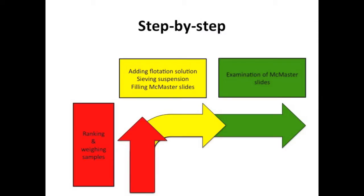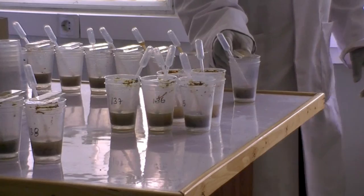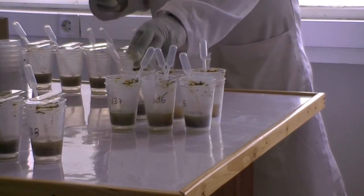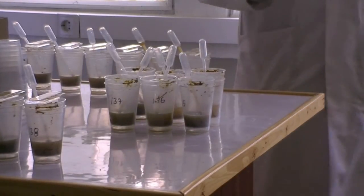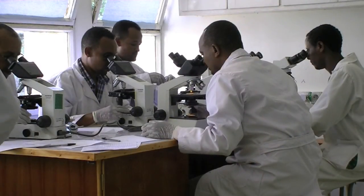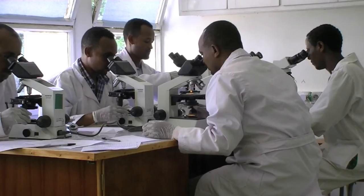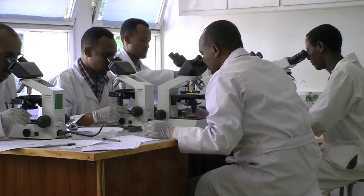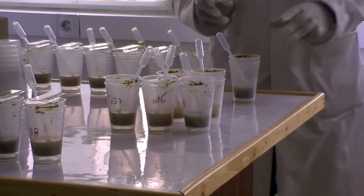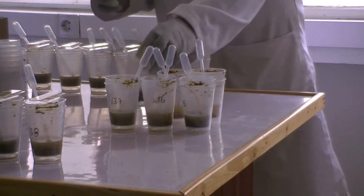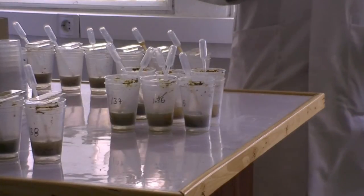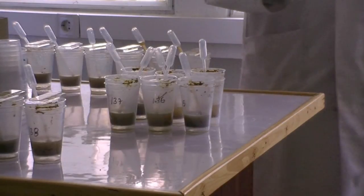Step 3: Examining the McMaster slides. It is important to start with the sample most closely to the edge of the table, as this sample was processed first and hence the eggs will have had sufficient time to float against the surface of the slide. To clearly indicate which slides have already been examined, it is recommended to put the beakers in the middle of the table, taking into account the order of the samples.